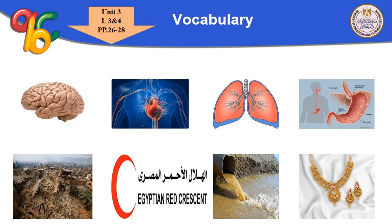We have some organs in our bodies. The first one is the brain — it tells the parts of our body what to do; it controls our body.